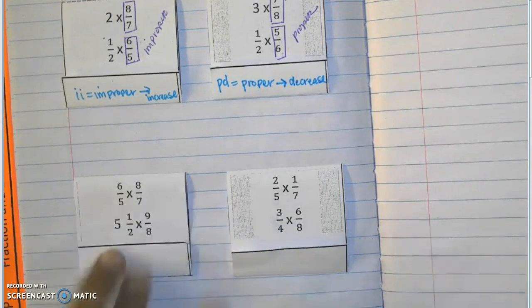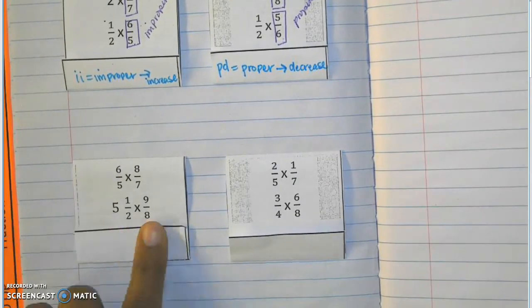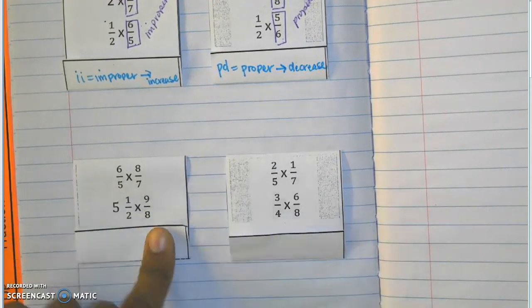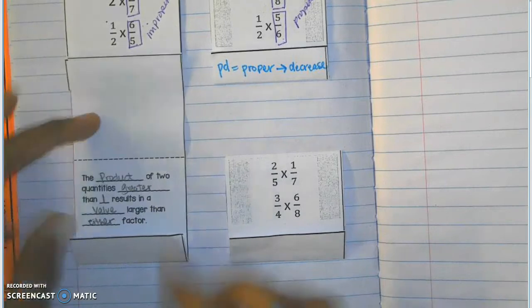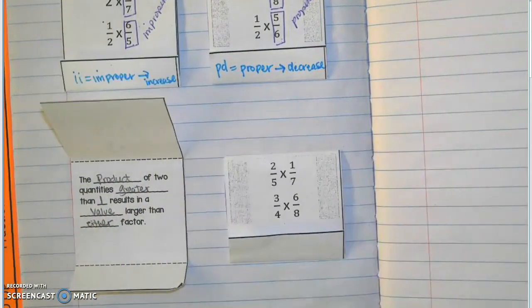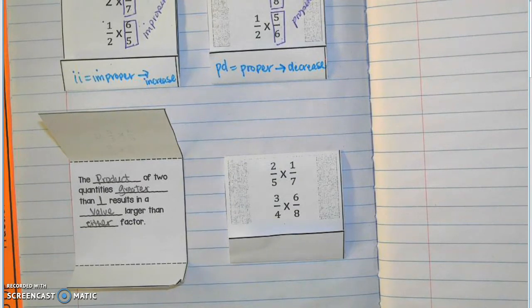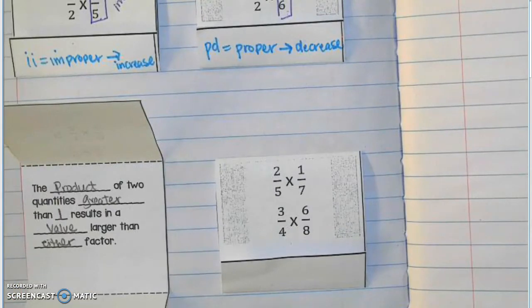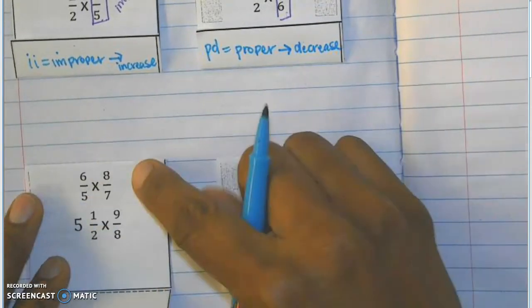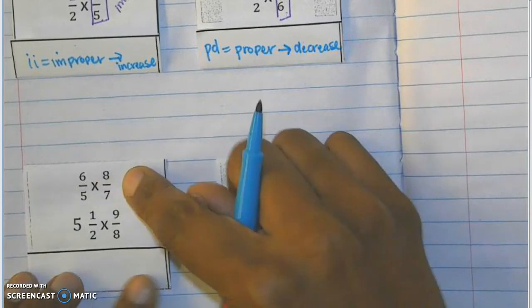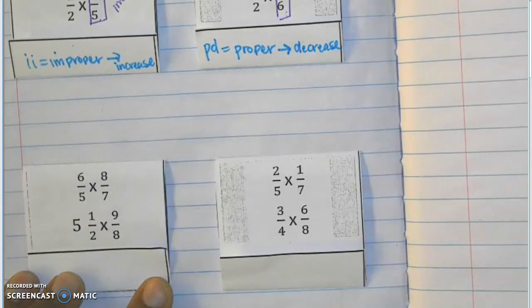Looking at these examples, six-fifths and eight-sevenths are both improper fractions, as well as five-halves and nine-eighths — this is a mixed number and an improper fraction, which is the same thing. The product of two quantities greater than one: improper fractions are greater than one because their numerators are greater than the denominator, which means they have a value over one. This results in a larger value than either factor. So the product is going to be larger than six-fifths and also larger than eight-sevenths.